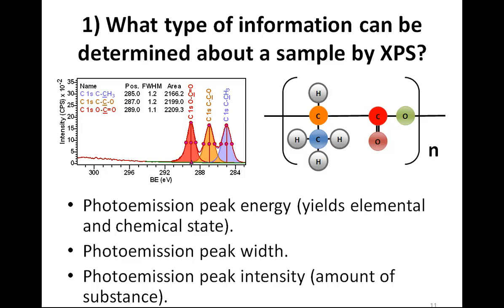The three peaks seen here are all of similar intensities as measured by area in counts per second eV. This suggests an equal number of carbon atoms in each of these chemical states within the polymer. So we are providing information about proportions of chemical states and the separation of chemical states through binding energy.